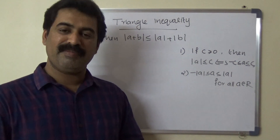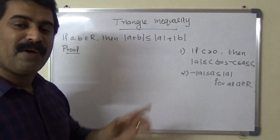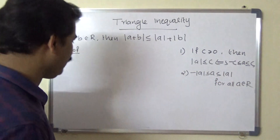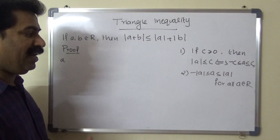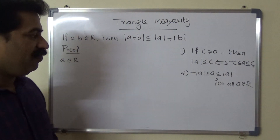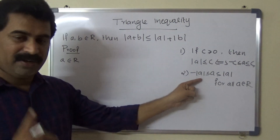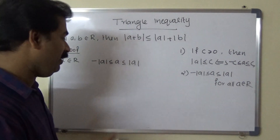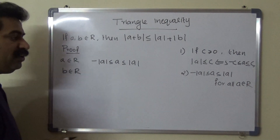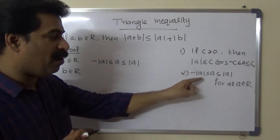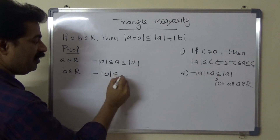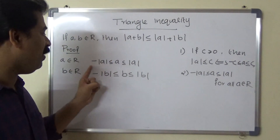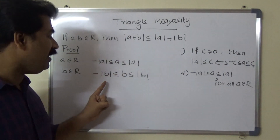I had covered these properties in my previous class — the link is in the description box. First we use the second property: -|a| ≤ a ≤ |a| for all real numbers. Taking a real number a ∈ ℝ, we write -|a| ≤ a ≤ |a|. Similarly, for another real number b, we have -|b| ≤ b ≤ |b|.